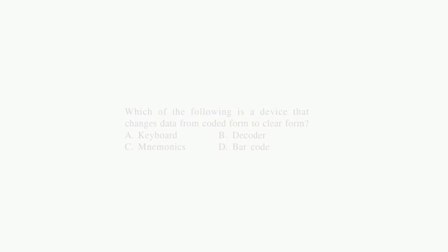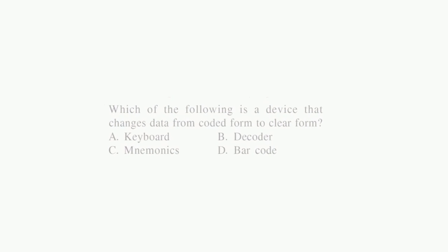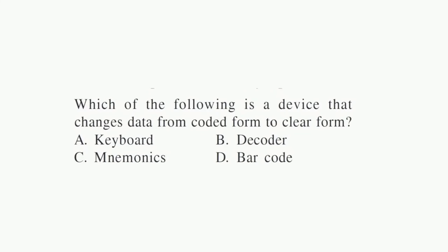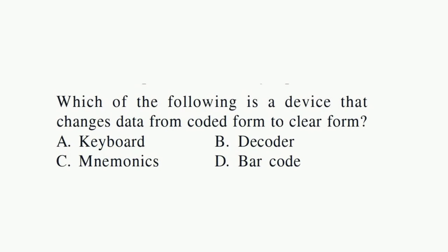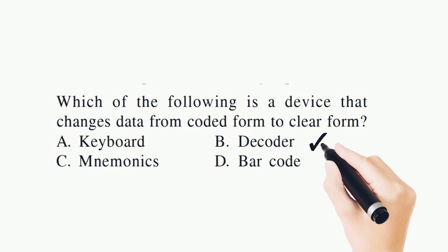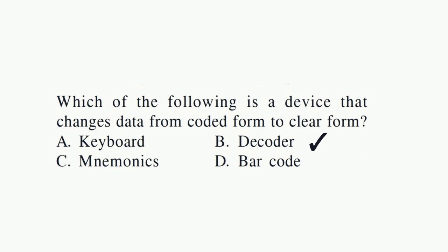The following is a device that changes data from coded form to clear form. Which device converts data from code? That is a decoder. This is also studied in cryptography — you can see details from there.